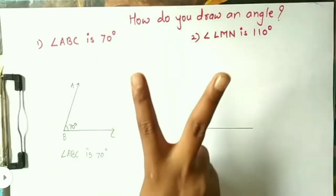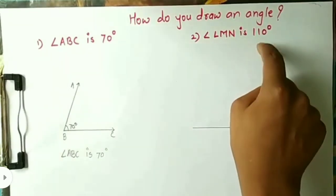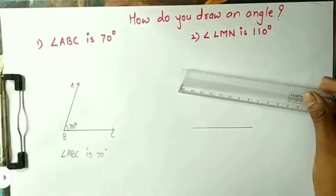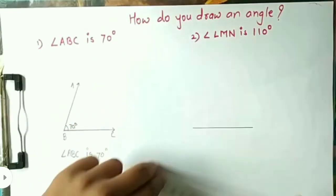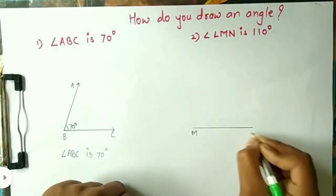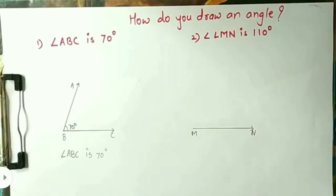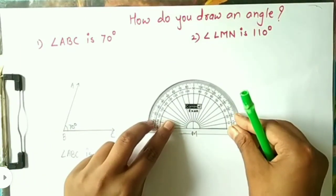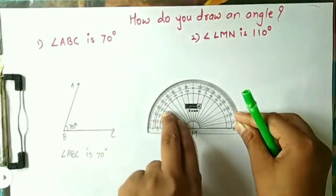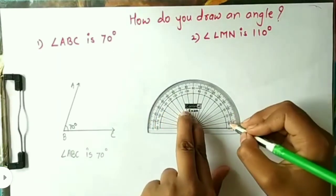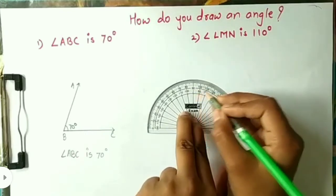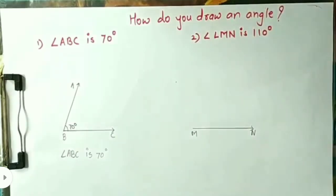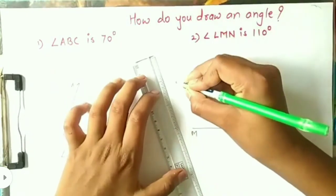Next angle is angle LMN which is 110 degrees. Repeat this process. First, draw an arm with a ruler. Give the name MN. Since M is the vertex, we must draw a 110 degree angle at that point. Put the center of the protractor on M. Count the divisions starting from the 0 near point N. Mark a point with your pencil at the division that shows 110 degrees. Lift the protractor and draw a line.